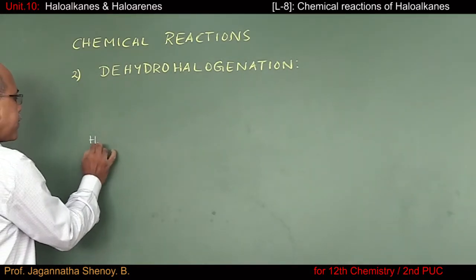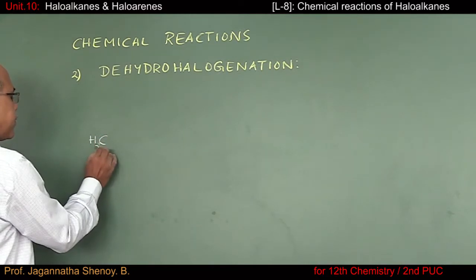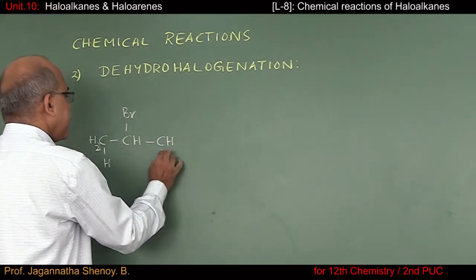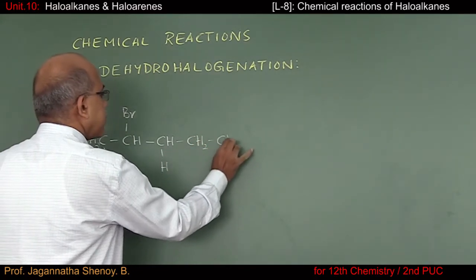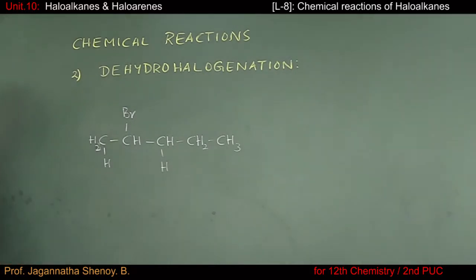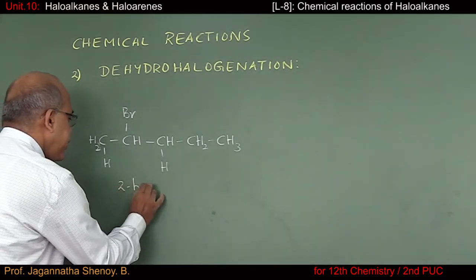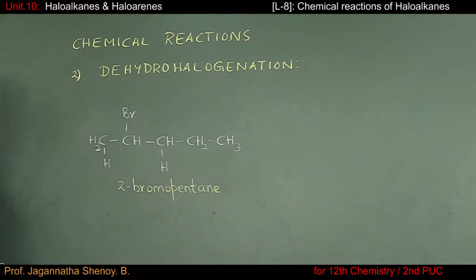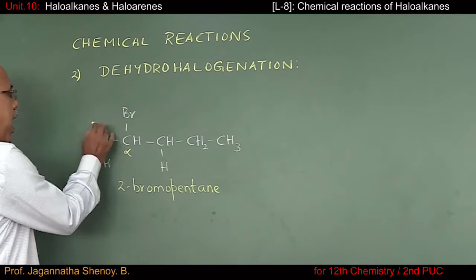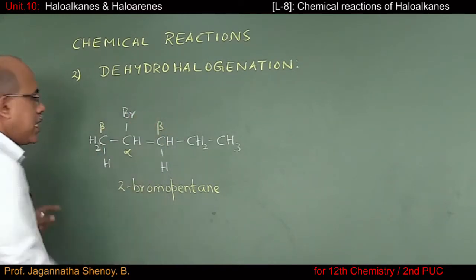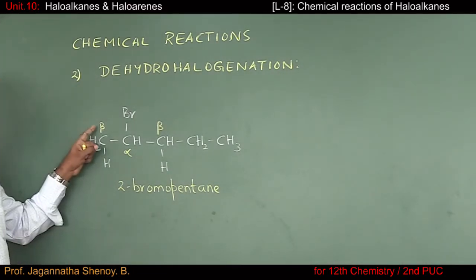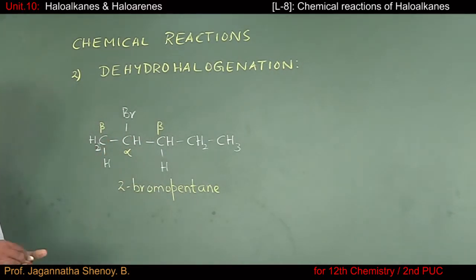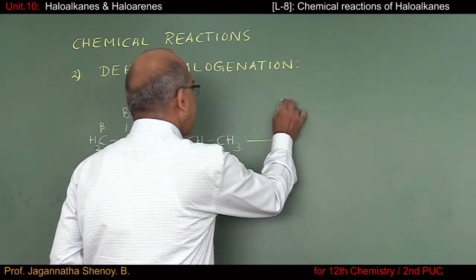In 2-bromopentane, the carbon atom to which the halogen is attached is the alpha carbon atom, and the immediately next carbon atoms are called beta carbon atoms. In this molecule there are two beta carbon atoms, and hence we come across two types of beta hydrogen.